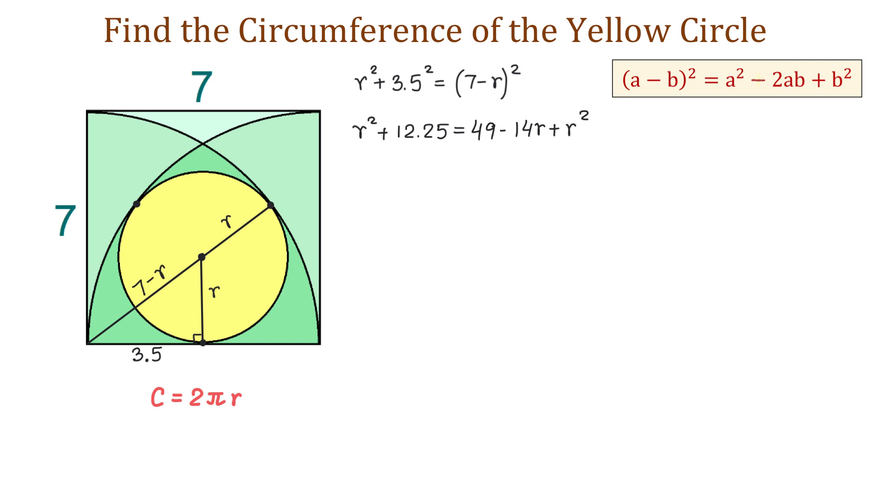Now, we will cancel r² on both sides. Then, we will move negative 14r to the left and 12.25 to the right. We will have 14r equals 49 minus 12.25. Then, 14r equals 36.75. We will divide both sides by 14 and r equals 2.625.